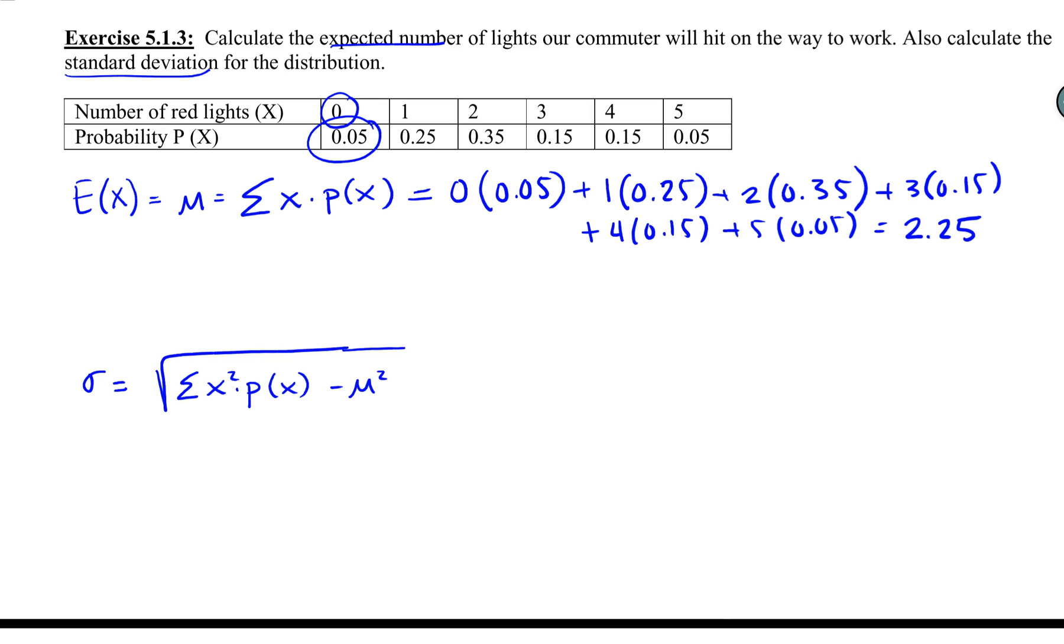For standard deviation, as we did in class, I like to use the second formula. I like to do the summation portion first and then plug that into the square root. So the summation of every outcome squared times the probability of it happening.